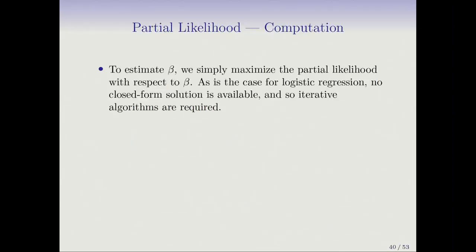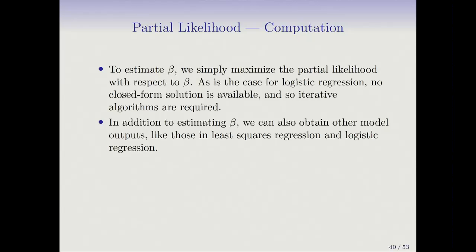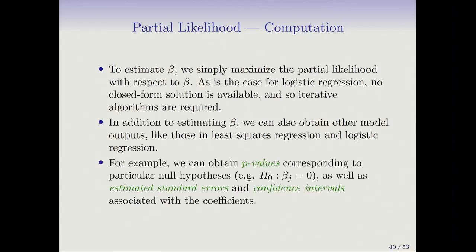As in the case of a lot of the models we've seen, like logistic regression, there's no closed form solution, so we have to apply an iterative algorithm. But it's no problem, it's done very easily now in software. And not only do we get what's called the maximum likelihood estimate, the partial likelihood estimate, we get the other goodies that we've seen in least squares and logistic regression. For example, we get p-values that correspond to typically null hypotheses, like beta j equals zero. Right, that's often what we want to know. Is a feature important? Is it contributing to the risk of a patient? As well as standard errors and confidence intervals. So all the goodies we've seen from analysis of variance and regression, we get them here in partial likelihood as well.